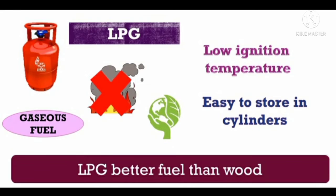To summarize: LPG is a gaseous fuel that replaces wood, which is a traditional solid fuel used for domestic and industrial purposes. LPG does not release smoke or pollutants, whereas wood produces a lot of smoke causing respiratory diseases and polluting the atmosphere. LPG has a low ignition temperature while wood has a high ignition temperature. LPG is easy to store in cylinders whereas wood needs a lot of space.